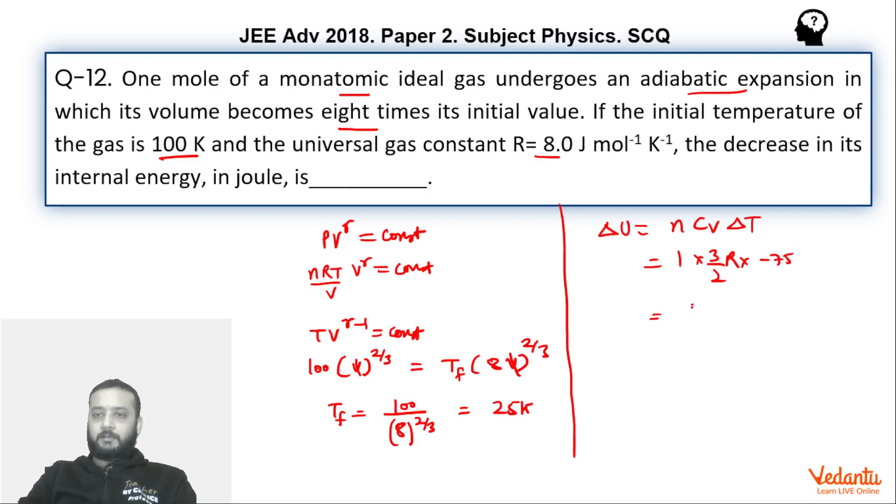So if you put the value of R, this becomes 3/2 times 8 times 75. Three halves times eight is twelve. 12 times 75.